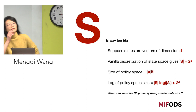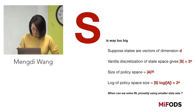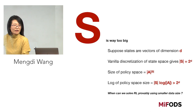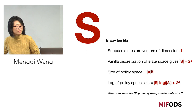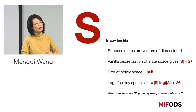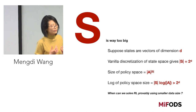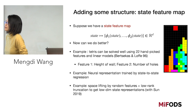An audience member asks: you showed the number of policies, and your conclusion is about sample size — do you need sample size at least the number of policies? The speaker responds: I just want to say that once S is big, all the quantities are super large, so the minimax sample complexity is not very meaningful. The mention of the log of policy space is because some results have sample complexity depending on that logarithm, but even that logarithm is actually a huge number.